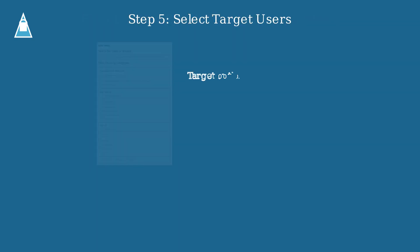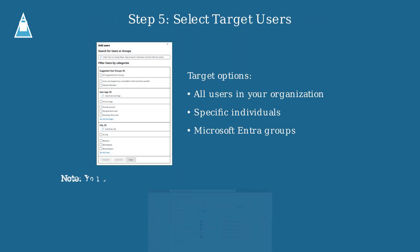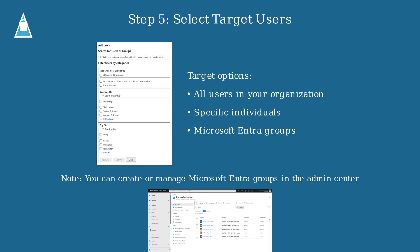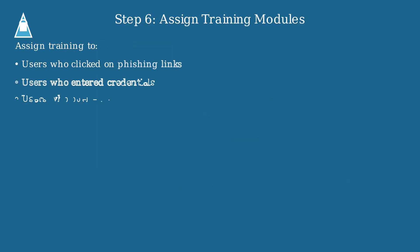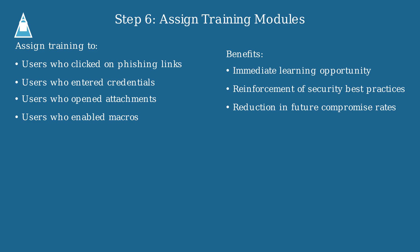Select the target users for your simulation. You can target all users in your organization, specific individuals, or Microsoft Entra groups, which you can create and manage in the Microsoft Entra Admin Center. Assign training modules to users who get compromised during the simulation — this provides an immediate learning opportunity and reinforces security best practices. You can assign different training based on the specific action taken, such as clicking a link or entering credentials.